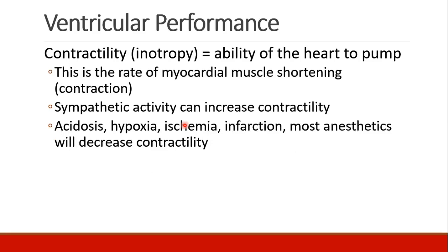The next topic to discuss is contractility. Contractility is not the same as cardiac output — cardiac output is just liters per minute of blood being pumped. Contractility, also called inotropy, is the ability of the heart to pump: how strong the heart is, how good a pump it is, how efficient. It's really the rate of myocardial muscle shortening, which is contraction. Things like sympathetic activity can increase contractility during stress or exercise. And all sorts of things can decrease contractility, like acidosis, hypoxia, ischemia, and infarction. In fact, most of our anesthetics are cardiac depressants, meaning they decrease contractility.